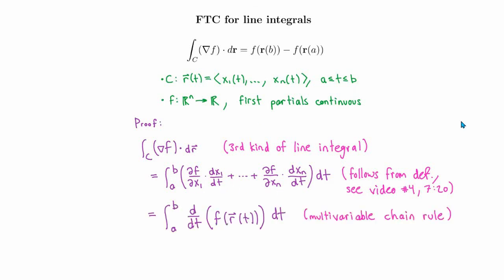Therefore, if you remember the chain rule from multivariable calculus, you'll recognize immediately that the quantity in parentheses is the derivative with respect to t of the function f(r(t)).